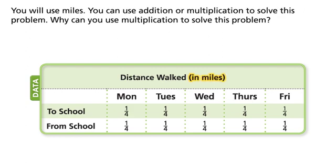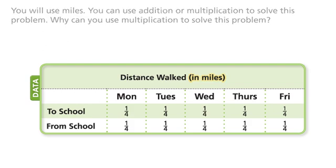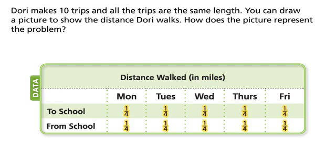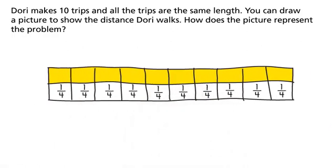You can use addition or multiplication to solve this problem. Why can you use multiplication to solve this problem? Dory makes ten trips, and all the trips are the same length. You can draw a picture to show the distance Dory walks. How does the picture represent the problem?